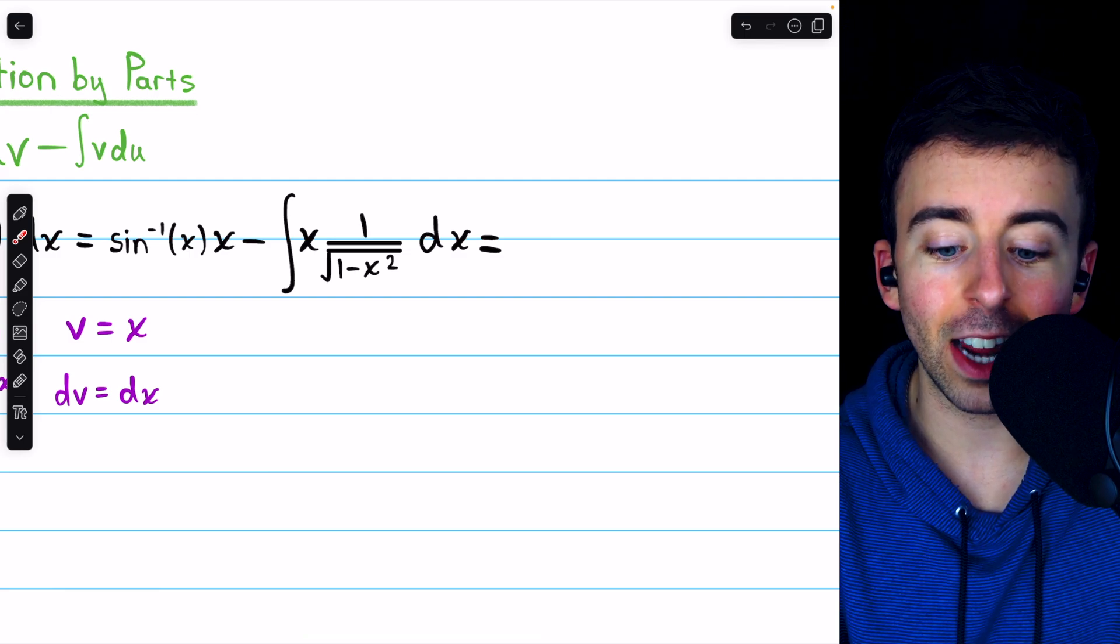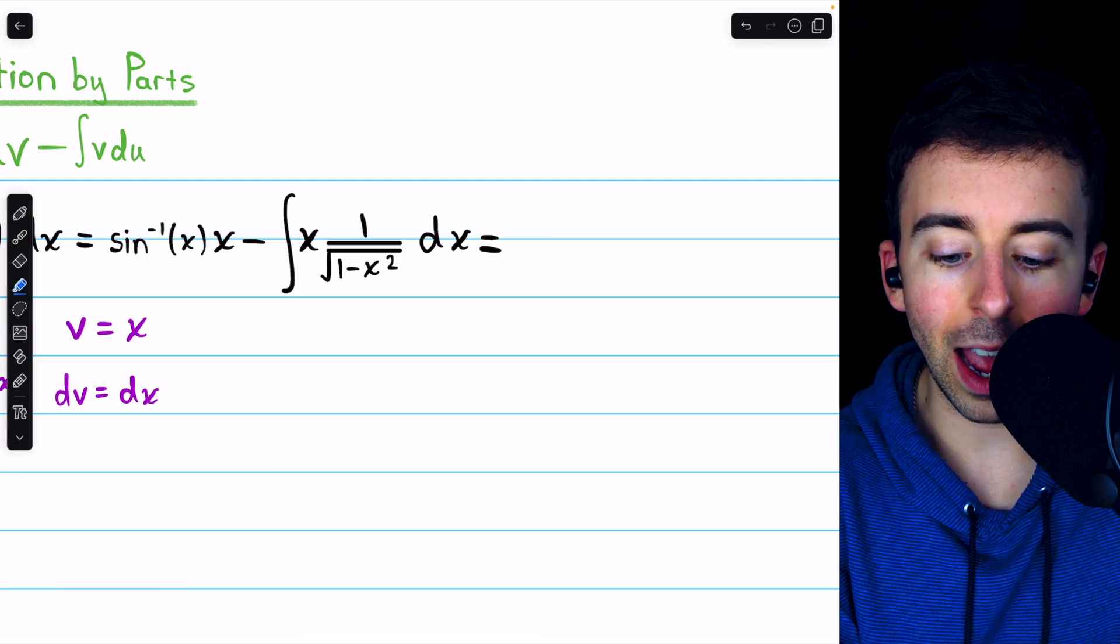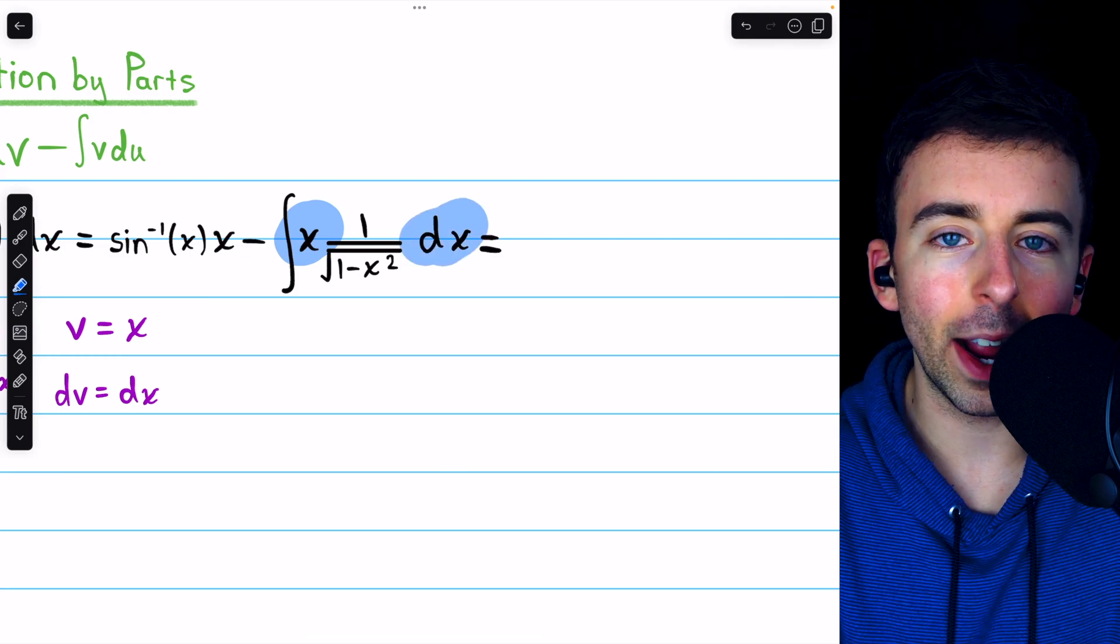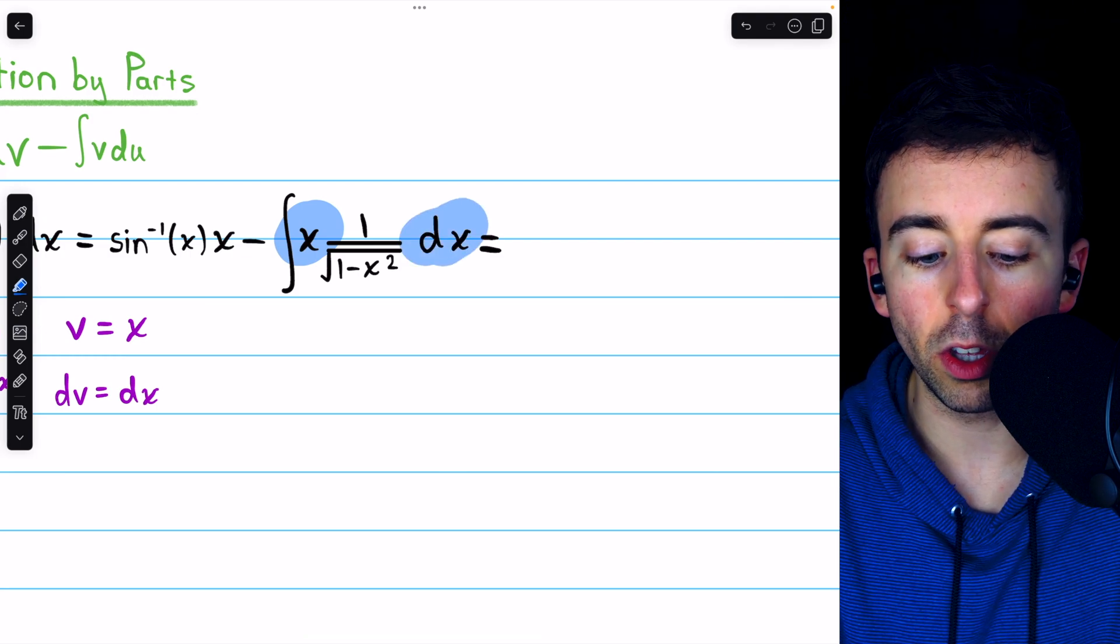And that's actually just a constant multiple of everything else in this integrand, which means we should use u substitution.